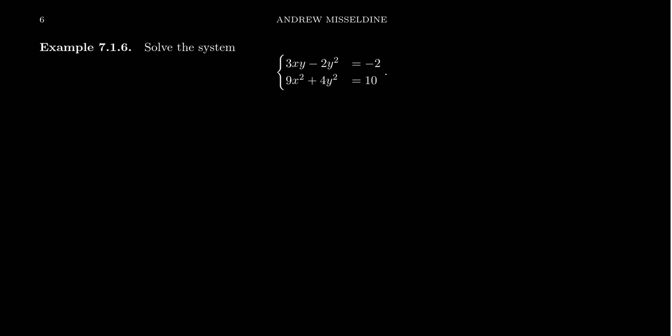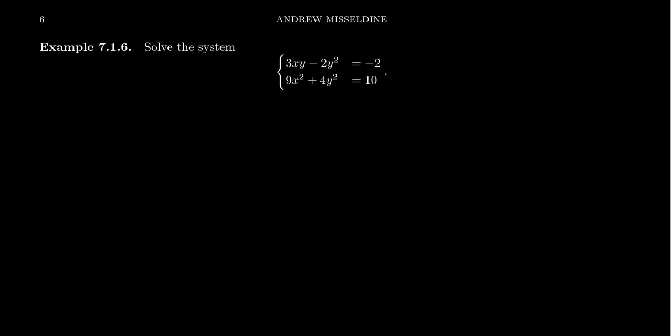In this video, I want to solve the nonlinear system of equations where there's two equations, two unknowns, where we have 3xy minus 2y² equals negative 2, and 9x² plus 4y² equals 10. This example is going to be challenging but doable. When you look at the second equation, we could recognize that it is an example of an ellipse.